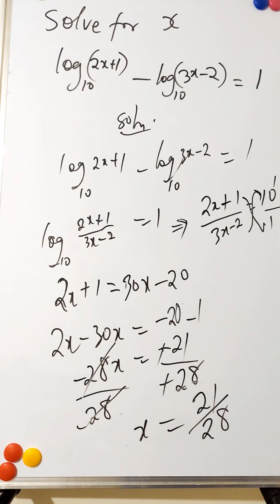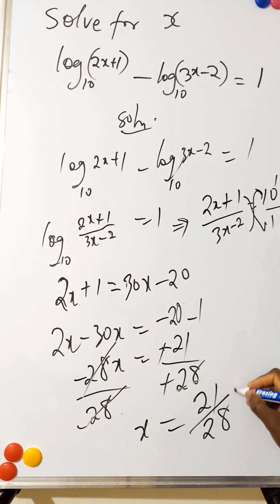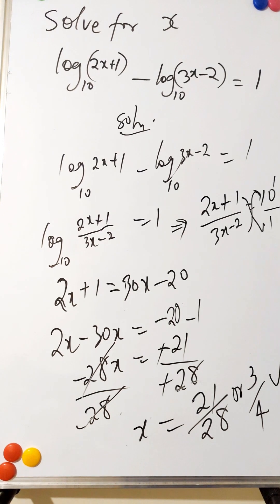Or you can break this down by saying 7 going into 21 is 3, 7 going into 28 is 4. So your final answer is 3 over 4.